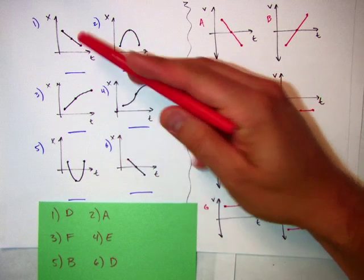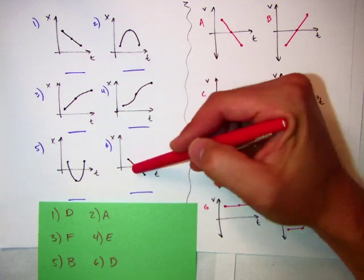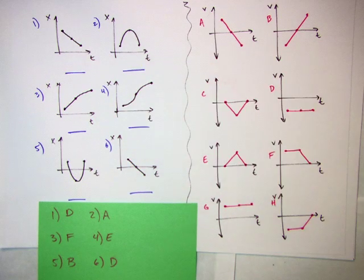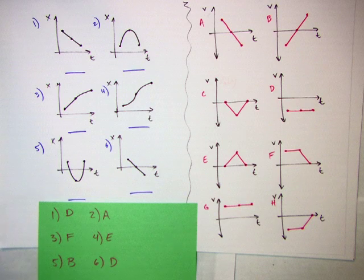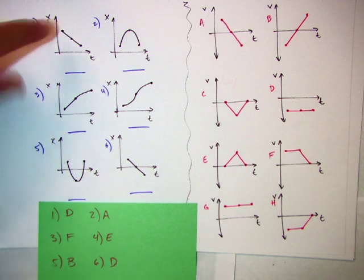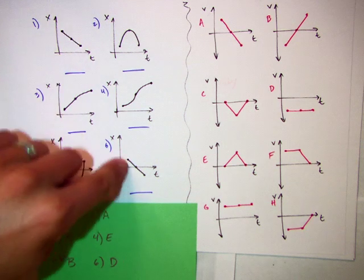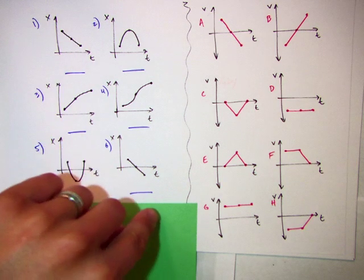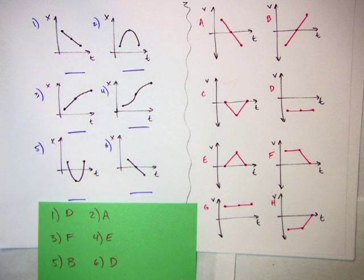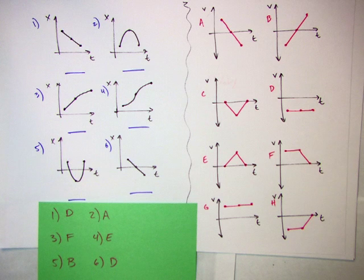Because the only thing that matters from my position time graph is not where my position is, but how my position is changing. So I could be in a positive position, getting more negative, going back to my origin. Or I could be in the negative direction, getting farther away from my origin. As long as the slope's the same, the velocity time graph is the same.